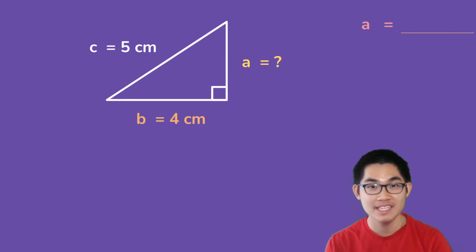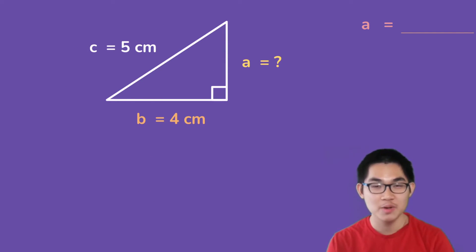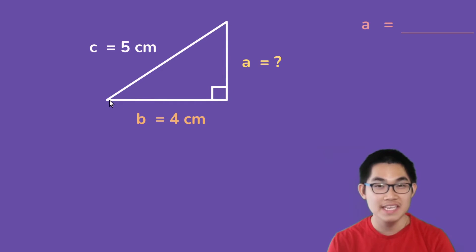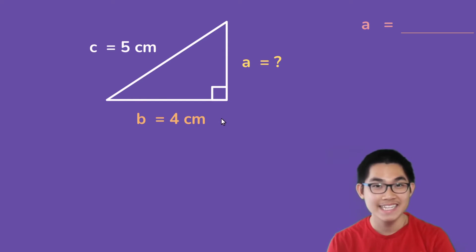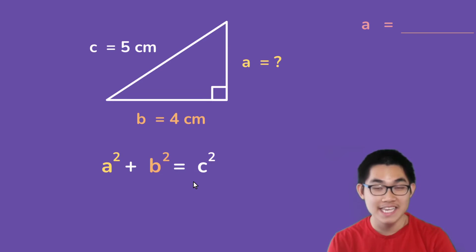How about this triangle? So in this triangle, we know that c is 5 centimeters and b is 4 centimeters. So what is a? What is this length over here? Because this is a right triangle, we know that we can use the Pythagorean theorem. Again, the formula is a squared plus b squared is equal to c squared. And we know that c is 5, b is 4, and we're trying to solve for a.